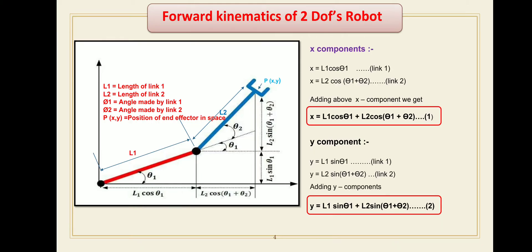Hello friends, today we will show you how you can derive the equation for forward kinematics of a 2-degrees-of-freedom robot. We already covered the concept of forward and inverse kinematics in a previous lecture. Forward kinematics is a process to get coordinates of the end effector from given angles of all joints. Inverse kinematics is a process to get all joint angles from given coordinates.